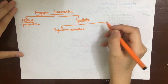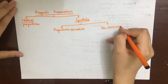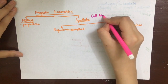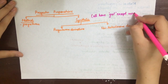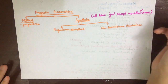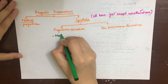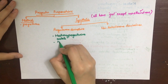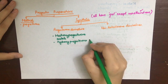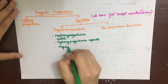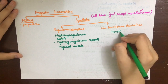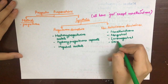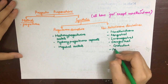The synthetics are either progesterone derivatives or nortestosterone derivatives. To identify them, all of them have 'gest' in their names except norethindrone, which you have to remember separately. The synthetic progesterone derivatives include medroxyprogesterone acetate, hydroxyprogesterone caproate, and megestrol acetate. The nortestosterone derivatives include norethindrone, norgestrel, levonorgestrel, desogestrel, gestodene, and norgestimate.